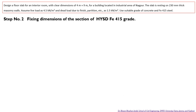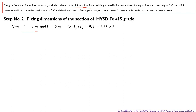Step number 2: we fix the dimensions of the section. The size of the slab is 4 meter by 9 meter as clear dimensions. The shorter span LX is 4 meter and the longer span LY is 9 meter. The ratio LY by LX equals 9 by 4, which is 2.25. Since this ratio is greater than 2, as per codal provisions this slab is to be designed as a one-way slab.